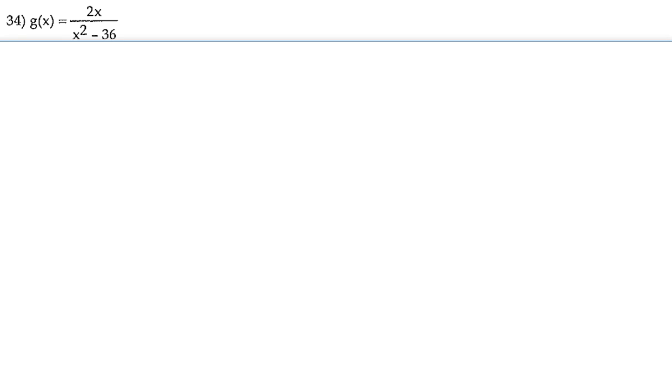So the two biggest things you have to worry about are when you have fractions, like what we have here, and when you have radicals. When you have fractions, for example, whatever is in the denominator, you can't have equal to 0.